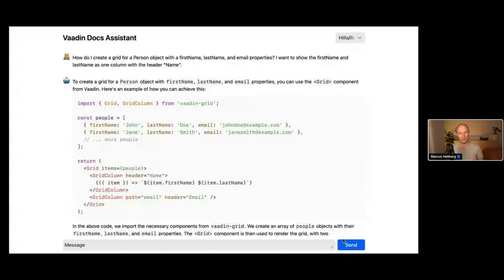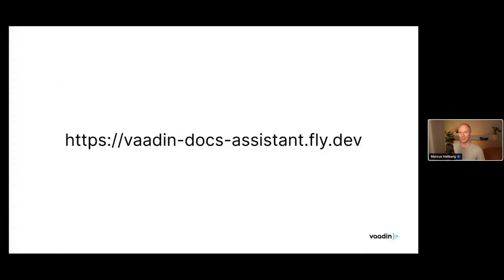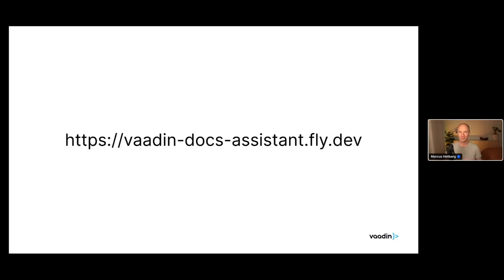That is exactly what I did. If you want to play around with this as we go along, you should be able to find a live version at this URL: vaadin-docs-assistant.fly.dev. Just as a heads up, this is a pre-release hobby version, not an official tool yet. We do have plans to make a more official version starting after the summer, hopefully integrated into our docs in the coming months.